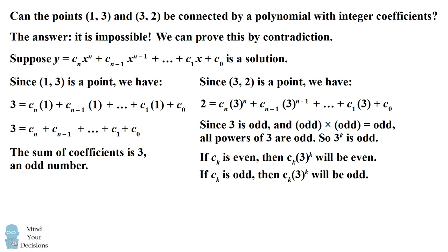So we can conclude that 2 has the same evenness or oddness as the sum of the coefficients. We can write this in another form. We can say that 2 is congruent to the sum of the coefficients when considering modulo 2. And this implies that the sum of the coefficients would have to be an even number.